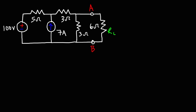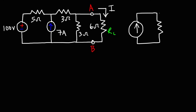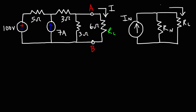In this video, we're going to talk about how to use Norton's theorem to calculate the current flowing through the load resistor. So let's go ahead and work on this example. The first thing we need to do is calculate the Norton's resistance, and then calculate the Norton's current. We're going to draw an equivalent circuit with the Norton's current, the Norton's resistance, and the load resistor, and use it to calculate the current flowing through the load resistor, which we'll call I-L.